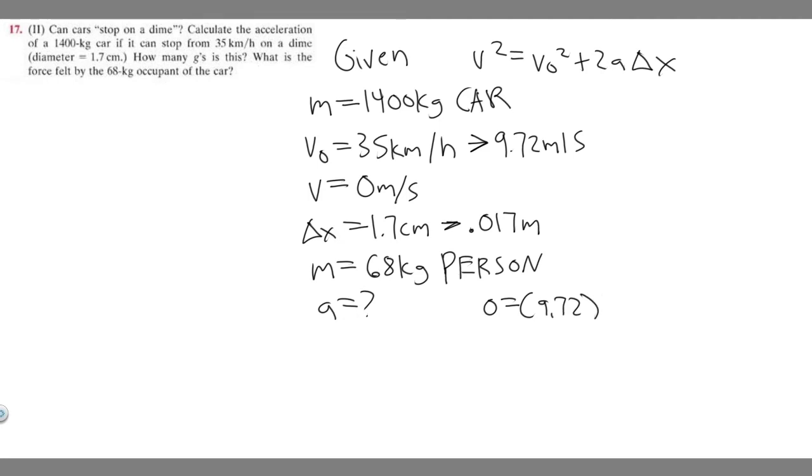So 9.72 squared plus 2 times a, and a is what we're solving for, so just leave it as the variable, times Δx, which is 0.017.